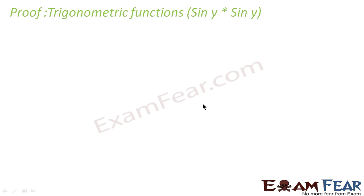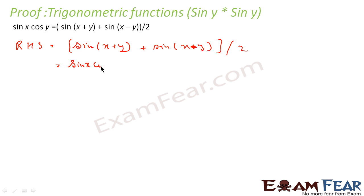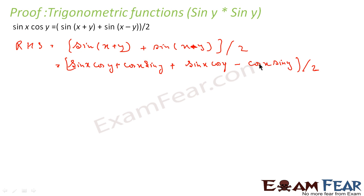Third formula: sin x · cos y = [sin(x+y) + sin(x-y)] / 2. Taking the RHS: sin(x+y) + sin(x-y), divided by 2. Expanding sin(x+y) gives sin x · cos y + cos x · sin y. Expanding sin(x-y) gives sin x · cos y - cos x · sin y. The cos x · sin y terms cancel, leaving 2 sin x · cos y divided by 2, which equals sin x · cos y — the LHS. Proved.